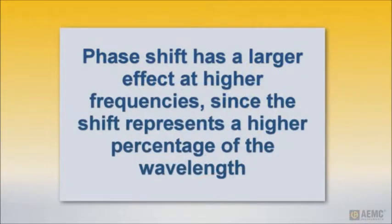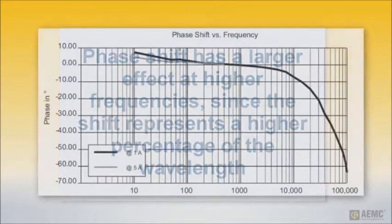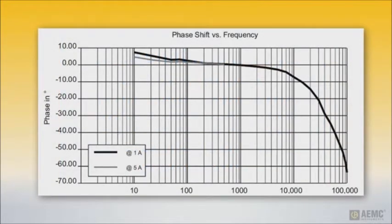Phase shift error can be especially acute at higher frequencies. This is due to the fact that as the wavelength grows shorter, the phase shift represents an increasingly larger percentage of the waveform. For instance, the graph shown on the screen, reproduced from the user manual of an AC current probe, shows how increasing frequency correlates with increasing phase shift for the subject probe.